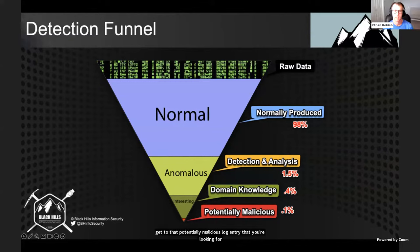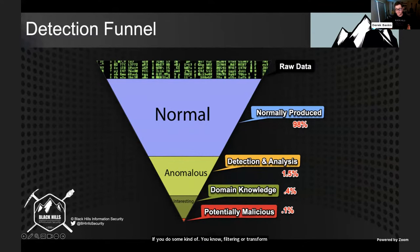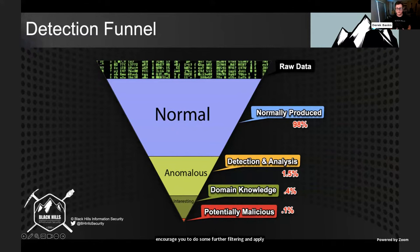The size of your haystack at the beginning matters too. We're talking percentages, but 0.1% of a billion is still quite a few. The rule of thumb when doing log analysis: if you do some kind of filtering, transform, or aggregation and you have more than around 100 data points to look at as a human, you might want to filter it more. If you have thousands of lines you're looking through manually, it's just not time efficient. I usually define a reasonable amount of time as an hour or less.